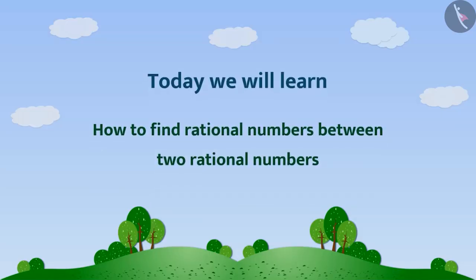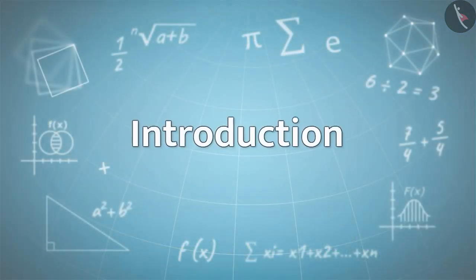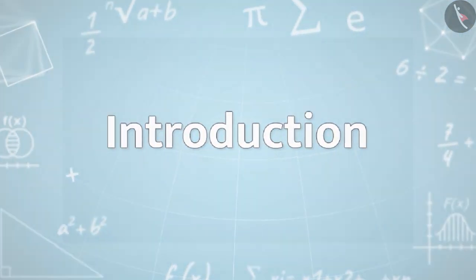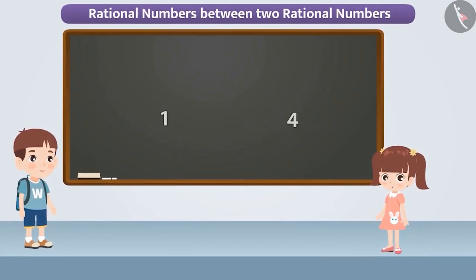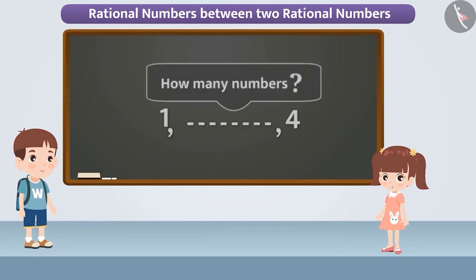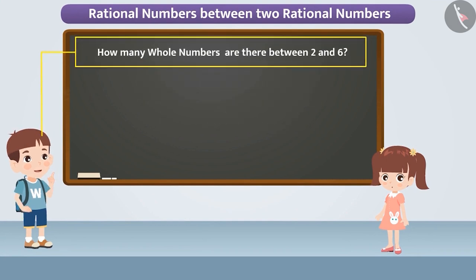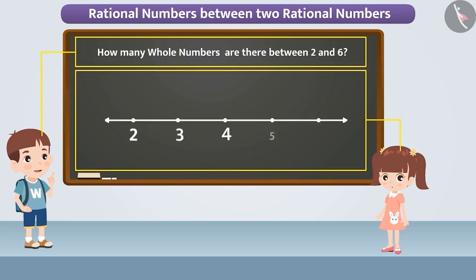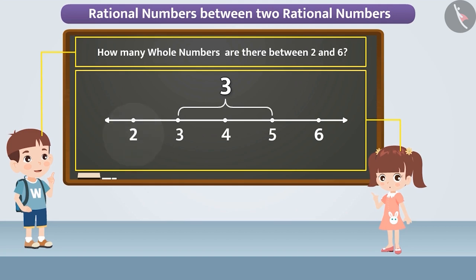Today we will learn how to find rational numbers between two rational numbers. Amit and Nisha were playing a game to find rational numbers between any two rational numbers. Amit asked how many whole numbers are there between two and six. To find the answer, Nisha wrote whole numbers from two to six, counted the remaining numbers except two and six, and replied that there are three whole numbers between two and six.